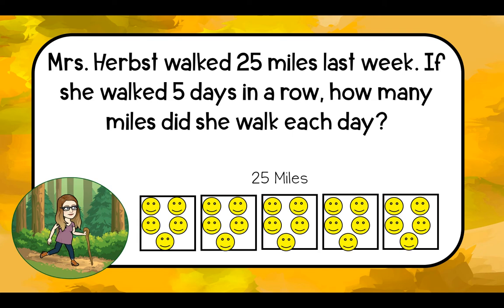There's all 25 miles split equally amongst the five days. How many miles did I walk in a day? Now I need to count how many smiley faces I put into a box. I see that there is one, two, three, four, five smiley faces in each box. That means that I walked five miles each day. 25 divided by five equals five. I know that's true because five times five equals 25.